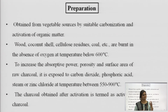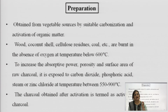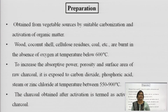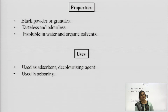Wood, coconut shell, cellulose residues, coal, etc. are burnt in the absence of oxygen at a temperature below 600°C, leading to formation of activated charcoal. To increase the absorptive power, porosity, and surface area of the raw charcoal, it is exposed to carbon dioxide, phosphoric acid, steam, or zinc chloride at a temperature between 550 to 900°C. The charcoal obtained after activation is termed activated charcoal. It is a black granular powder, tasteless and odorless, insoluble in water and organic solvents.